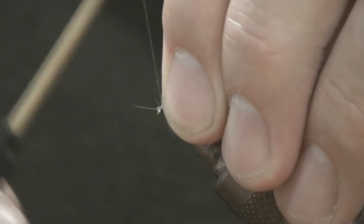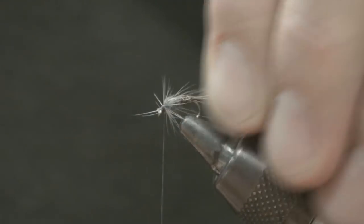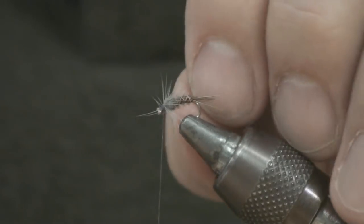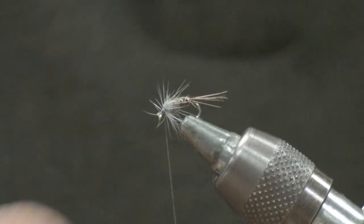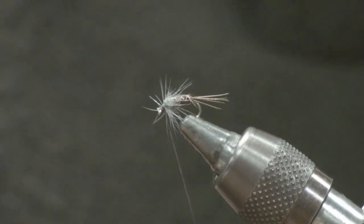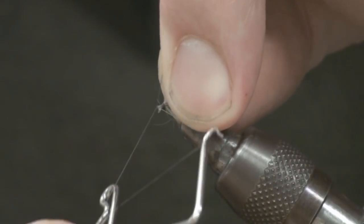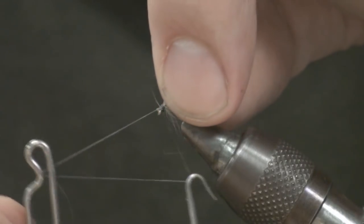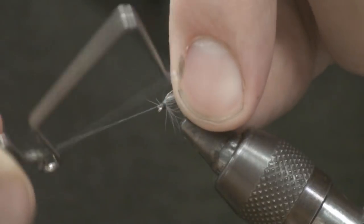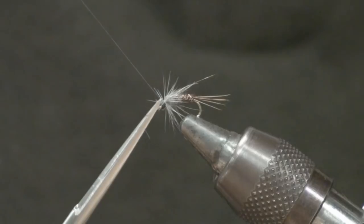Trim that off. Then I'll take my fingers and just hold that hackle towards the rear of the hook, towards the bend of the hook. Take a couple of turns back over just so that hackle is angled towards the back. Put my whip finish in and then I can cut my thread.